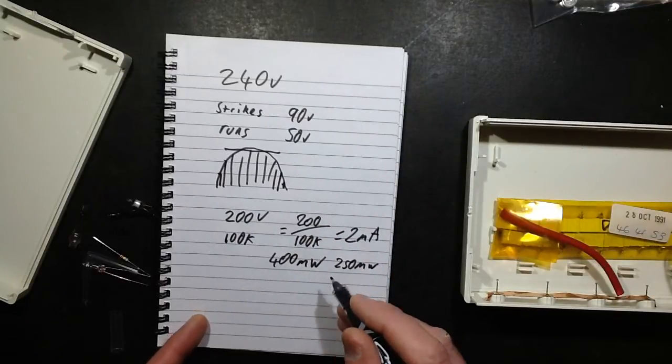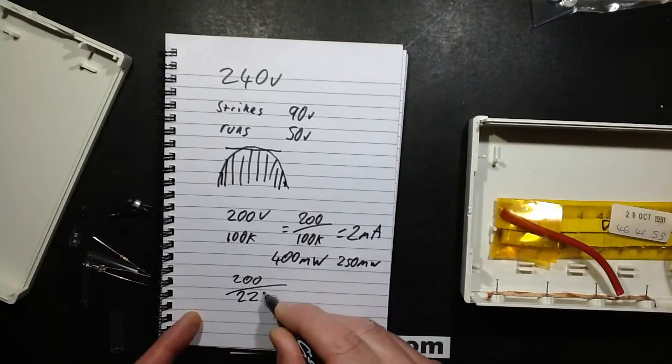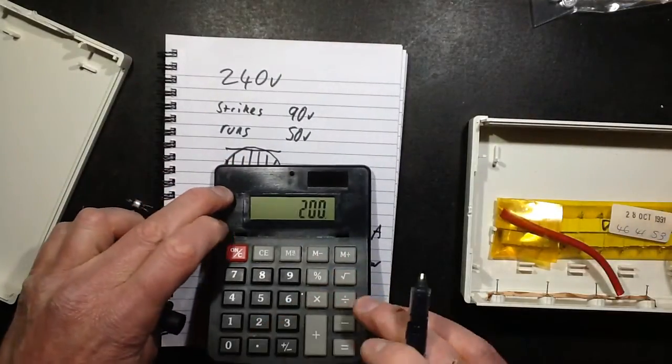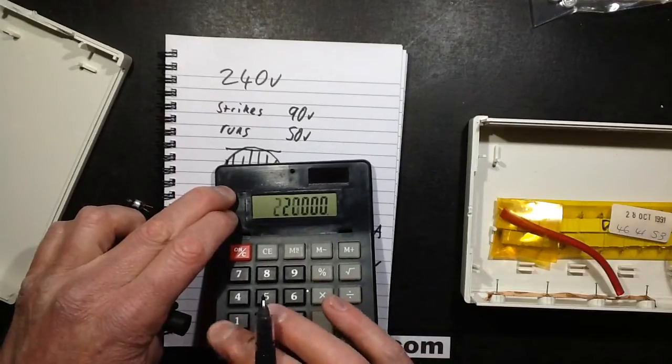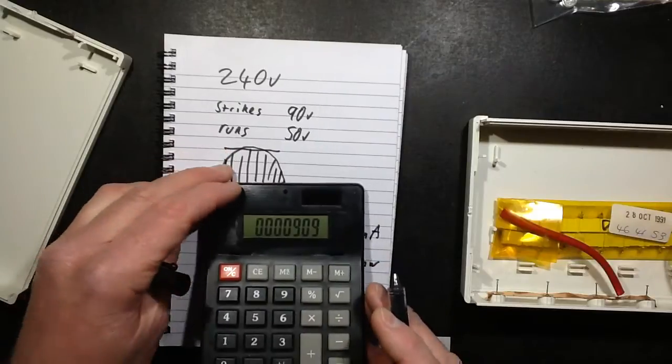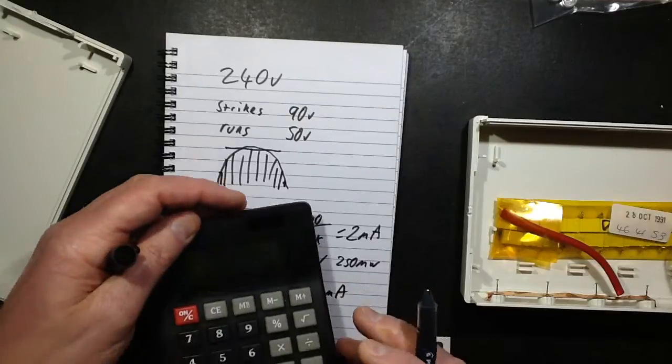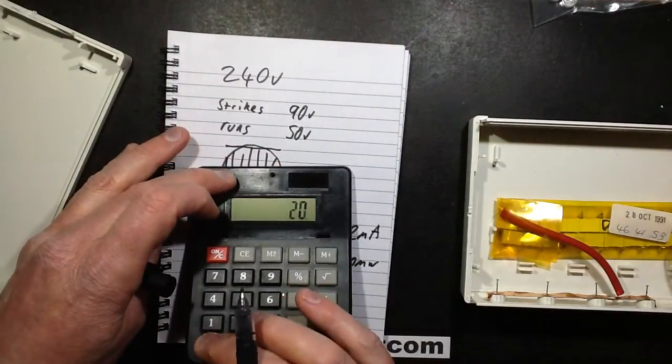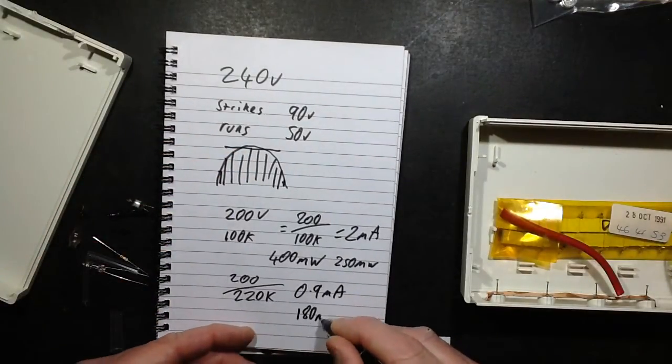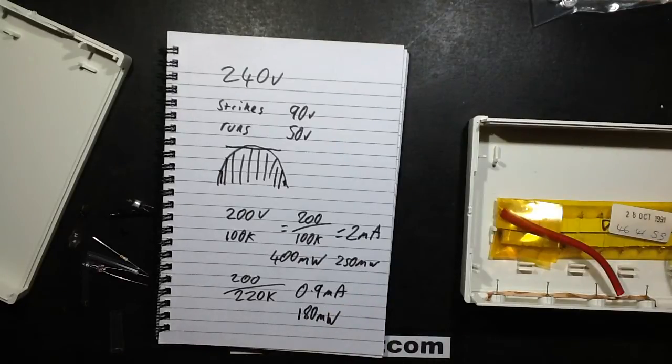Now I'm going to put in a 220 K resistor. So now we're looking at 200 divided by 220 K. So that's 200 divided by 220 K equals the current is now going to be 0.9 of a milliamp. So that's 0.9 milliamp and the power dissipated by the resistor times 200 is going to be 180 milliwatts. 180 milliwatts which is well within the continuous rating for 250 milliwatt resistor. So that's what we're going to put in.